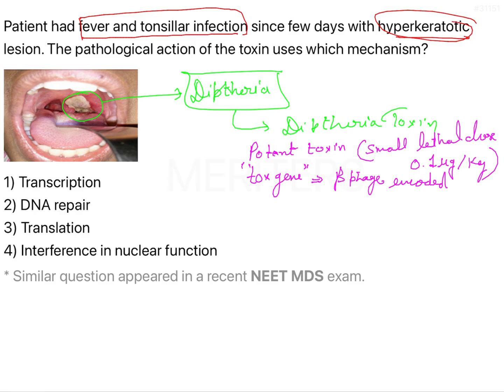The production of the toxin is regulated by iron levels. When the iron level is less than or equal to 0.1 milligram per liter, production of diphtheria toxin begins and keeps increasing.